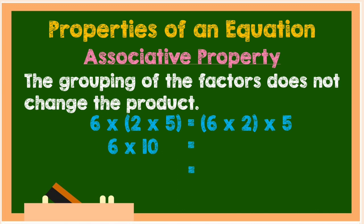2 times 5 is equal to 10, so 6 times 10. 6 times 2 is equal to 12, so 12 times 5. 6 times 10 is equal to 60. And 12 times 5 is also equal to 60.